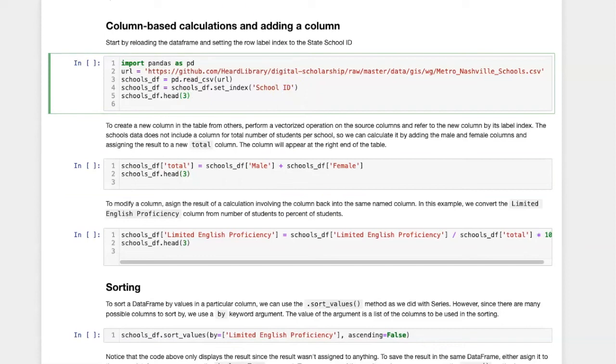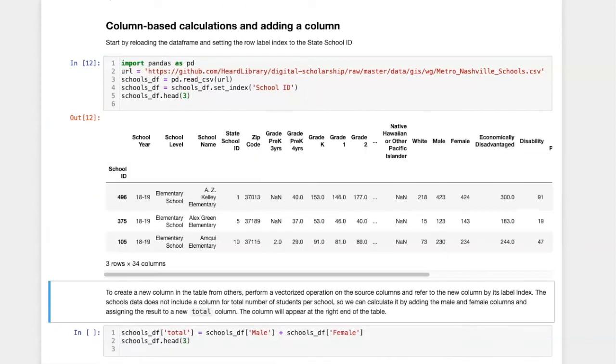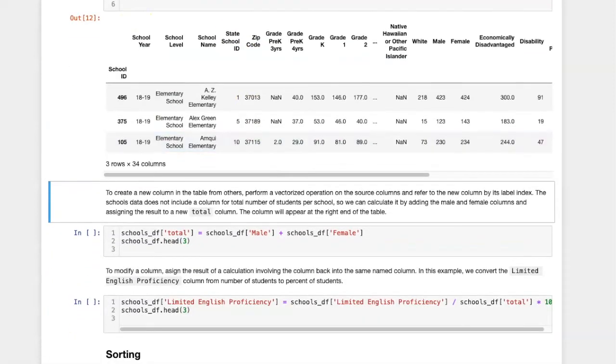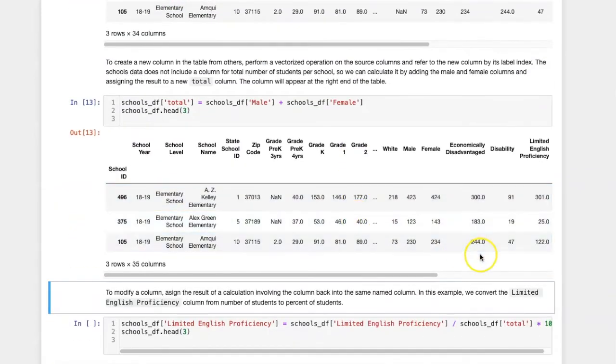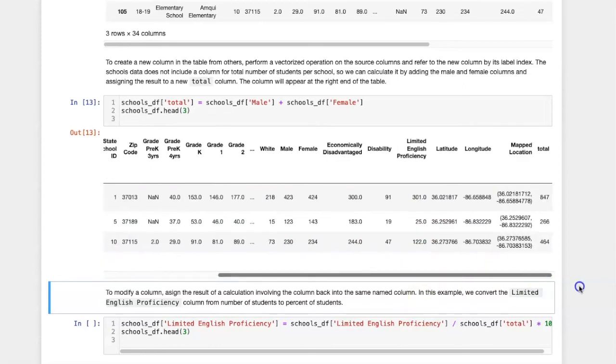Let's go ahead and try this. First we'll recreate the data frame by reloading the data, and now let's do the calculation. We can see here that there is a new column, and it was placed at the end of the data frame, and it contains the total.